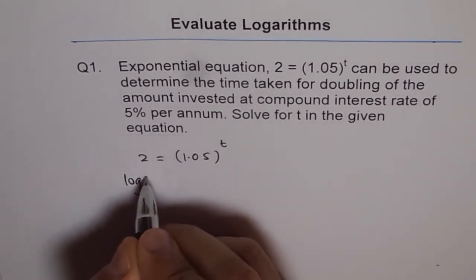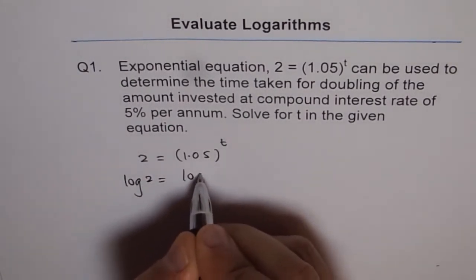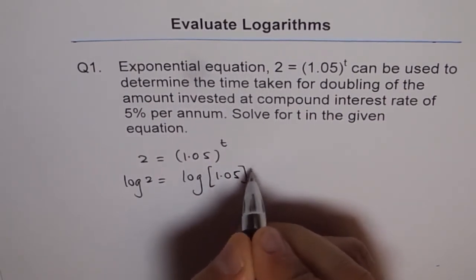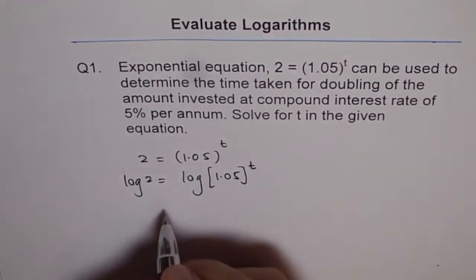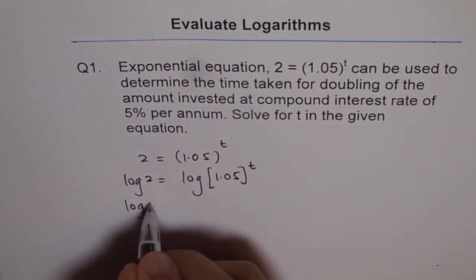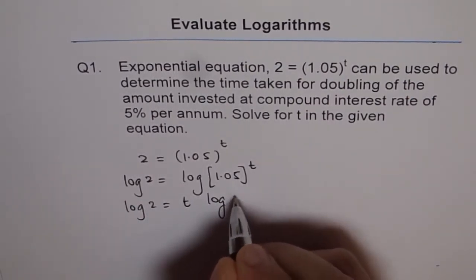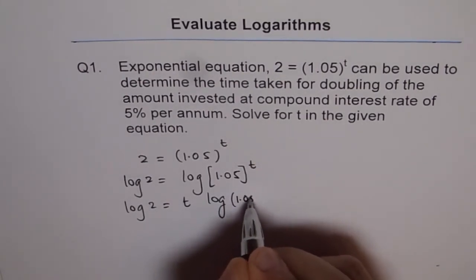We get log 2 = log(1.05)^t. This could be written as log 2 = t × log 1.05.